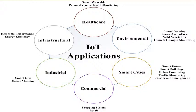Other IoT applications include real-time performance and energy saving — for example, solar panels placed on top of buildings receive sun rays, store energy, and that energy is used when regular current is not available. The six main IoT application areas are: infrastructure, healthcare, environmental, smart cities, commercial, and industrial.